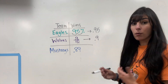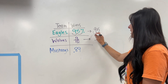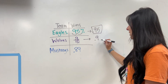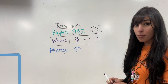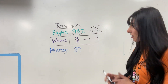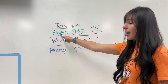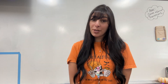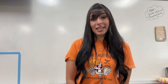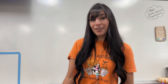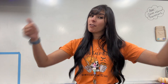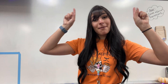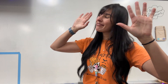Now, who had the most wins? 0.95 is going to be bigger than 0.9 — very close, but Eagles win! Alright, so that's just a quick review on how to compare fractions, decimals, and percents. If you liked this video, give it a big thumbs up. Don't forget to subscribe. I'll see you in the next one. Bye guys.